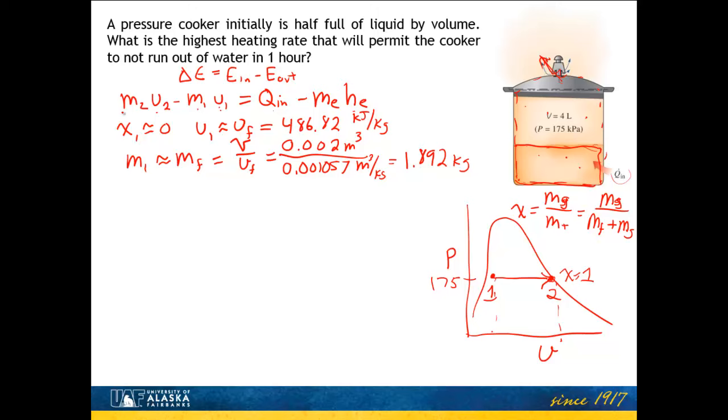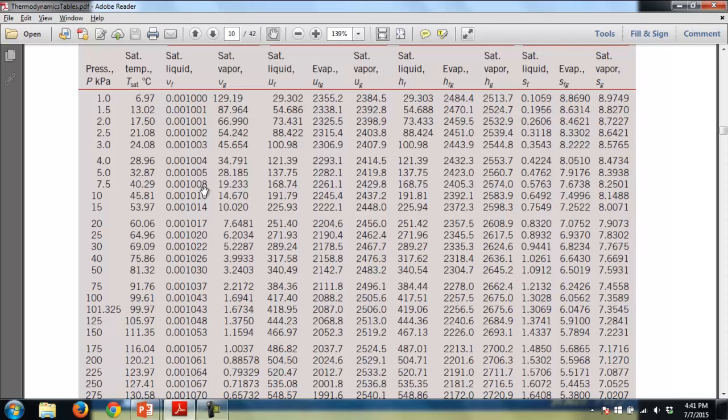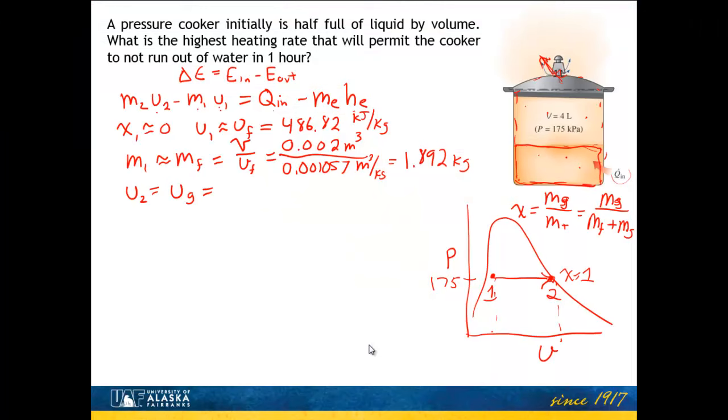Let's move to state 2. What is U2, the internal energy at the final state? The quality is 1, I'm at 175, so U2 is the internal energy of saturated vapor, U sub G. From the tables, U sub G is 2524.5 kilojoules per kilogram.